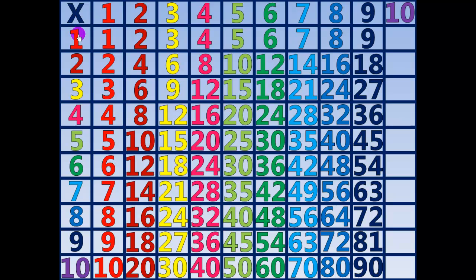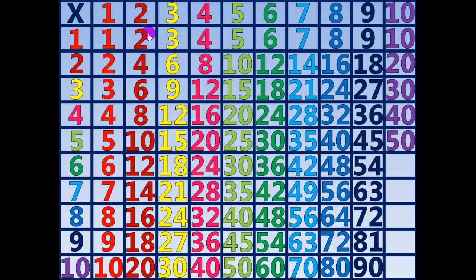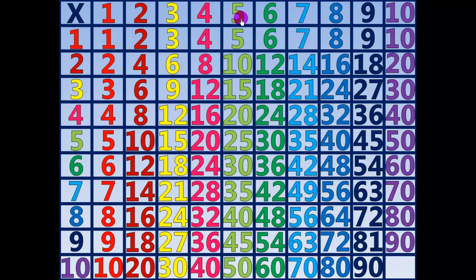10 times 1 equals 10. 10 times 2 equals 20. 10 times 3 equals 30. 10 times 4 equals 40. 10 times 5 equals 50. 10 times 6 equals 60. 10 times 7 equals 70. 10 times 8 equals 80. 10 times 9 equals 90. 10 times 10 equals 100.